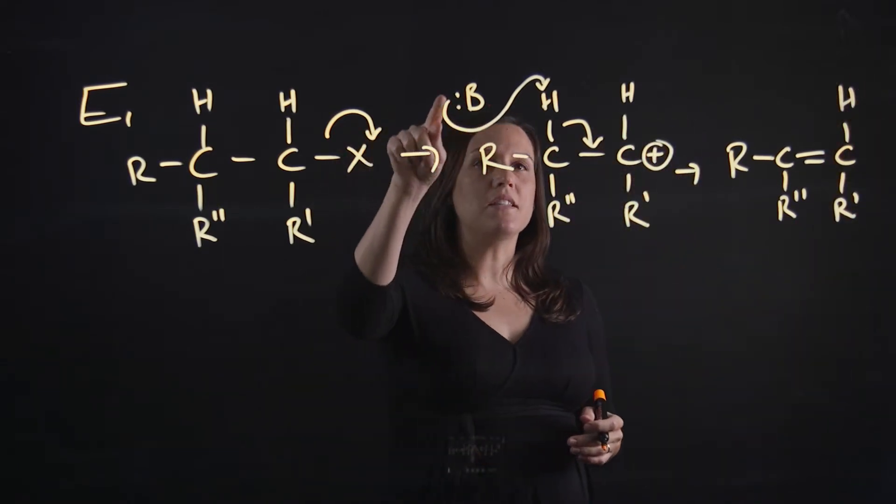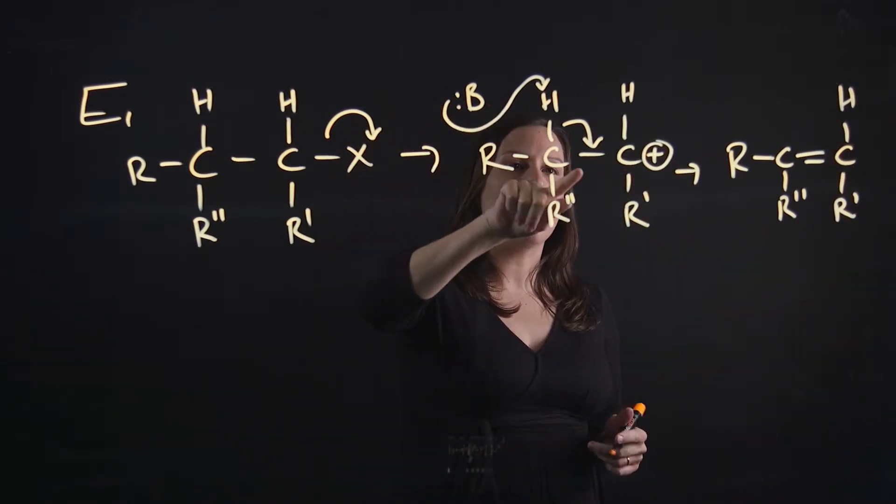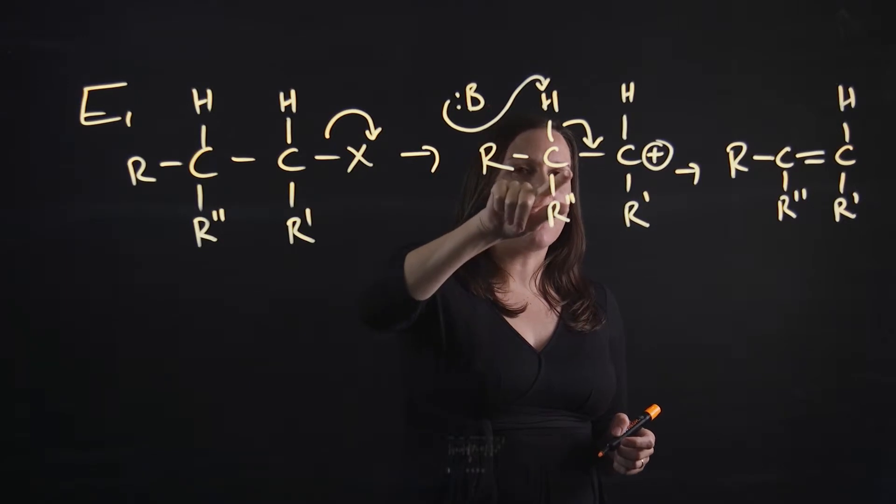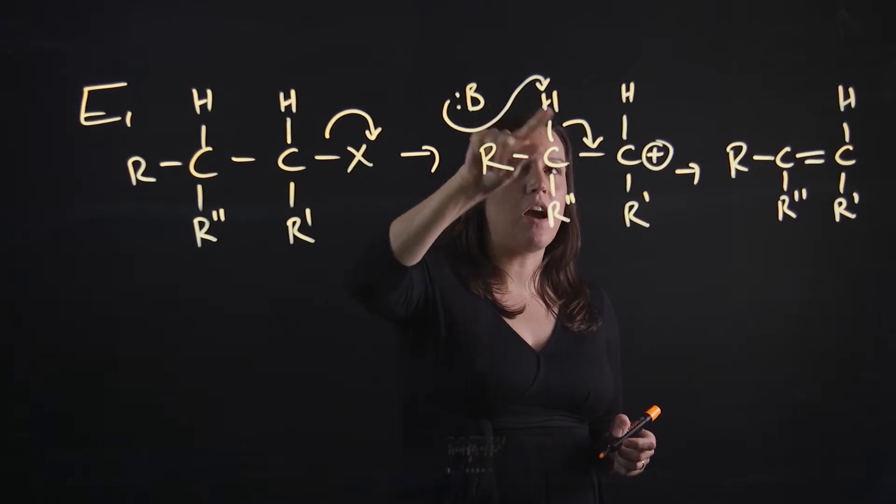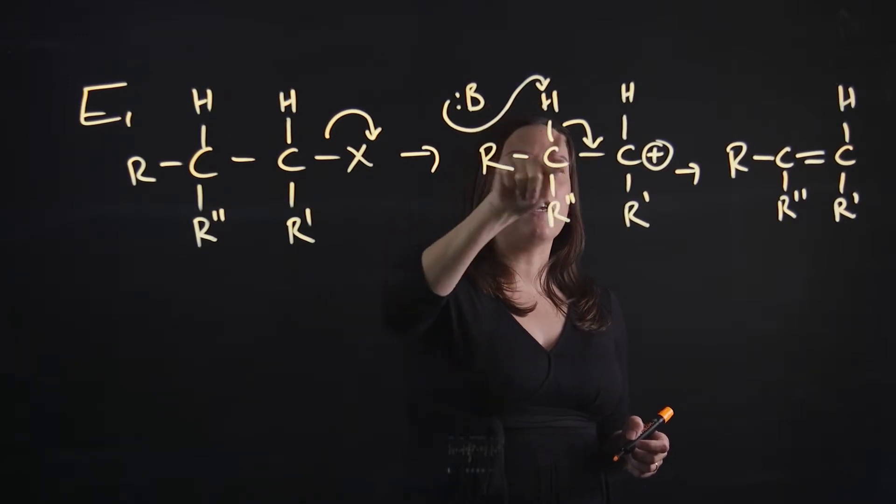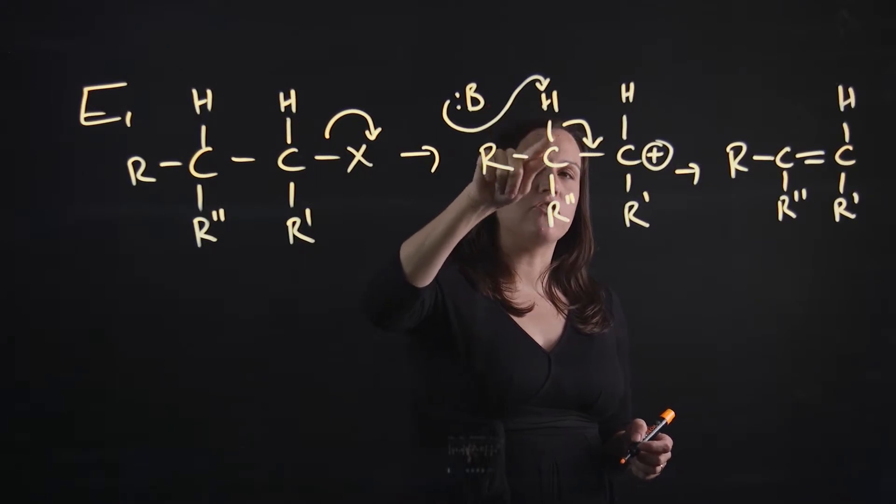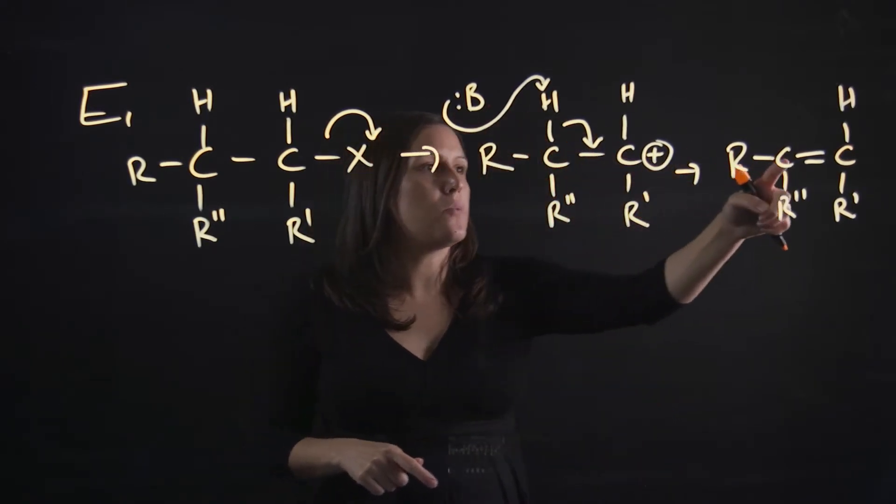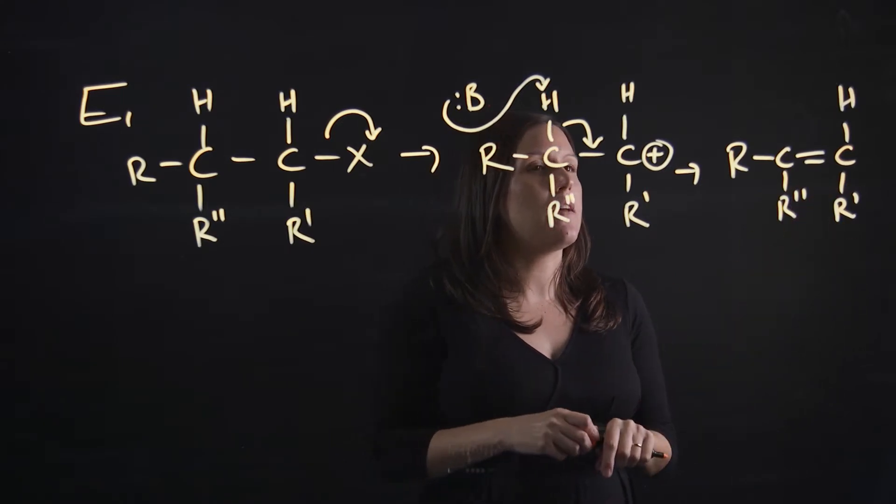You can see the base has come along, deprotonated that alpha beta carbon hydrogen, so it's our beta hydrogen. Then we have the electrons from that hydrogen bond going in to form the double bond. So we've got our elimination product there.